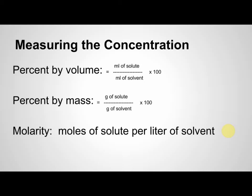We can figure out a percent by mass. The grams of solute divided by the grams of the solvent times 100 to get a percent by mass. The third one is molarity. Molarity is the moles of solute per liter of solvent.